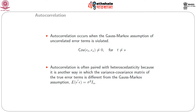Autocorrelation is often paired with heteroscedasticity, which is another Gauss-Markov assumption. Under heteroscedasticity, we assume that the error terms have different variances. Autocorrelation is paired with heteroscedasticity because it is another way in which the variance-covariance matrix of the true error terms differs from the Gauss-Markov assumption — that expectation of epsilon-prime epsilon equals sigma-squared times I_n, where I_n is the identity matrix of order n.